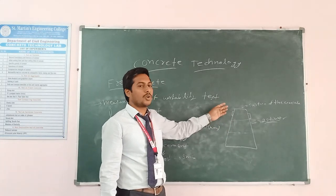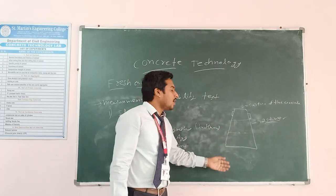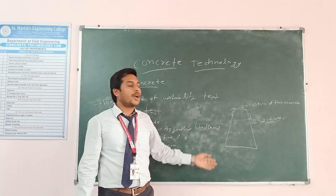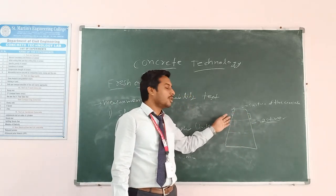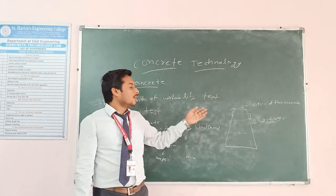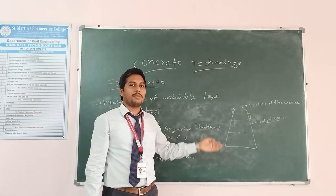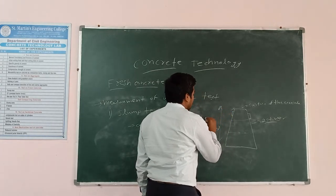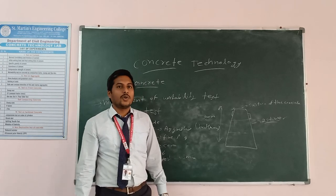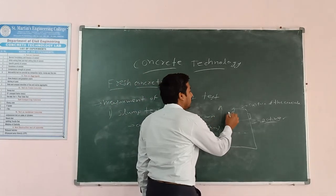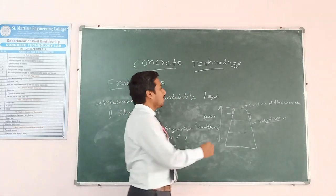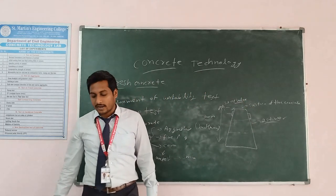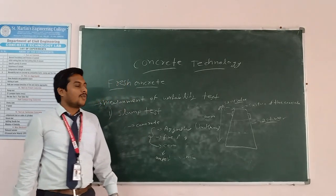After leveling, we remove the slump cone carefully without disturbing the concrete. After removing the cone, we measure the height of the concrete. The cone is 30 cm tall. We measure how much the concrete has collapsed. That difference is the slump value.